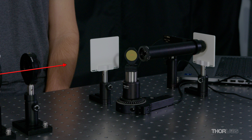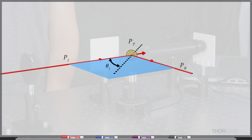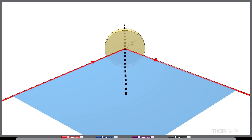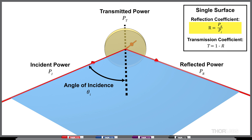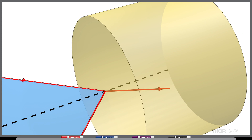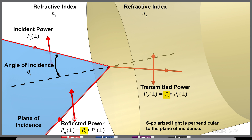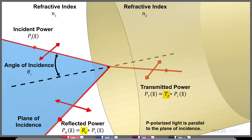We can approximate the expected transmitted and reflected percentages using the Fresnel equations. The Fresnel equations provide the reflection and transmission coefficients for light incident upon a surface. Each coefficient depends on the incident beam's angle of incidence and the refractive indices for the incident medium and transmitted medium. There are different equations for the transmission and reflection coefficients for the orthogonal S-polarized incident light and P-polarized incident light.